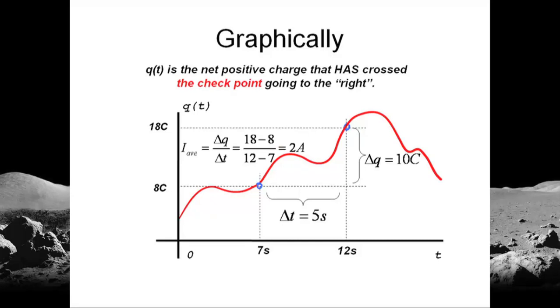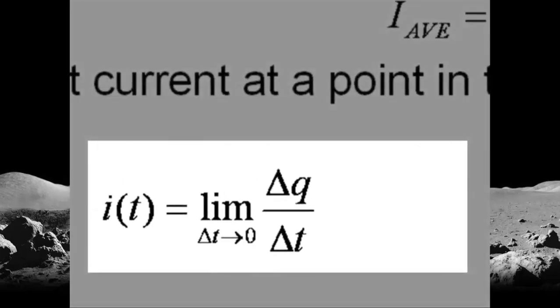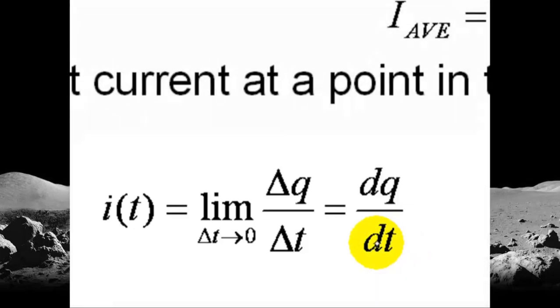The average current in that point of check is 2 amperes. That value happens to be the slope of the line that joins those two points, and that is the average current. It is delta q divided by delta t, the average current in the time window delta t. But what if what we want is not the average current? What we want is the exact value of the current at one point in time. Well, what we do is we make that time window as small as possible, infinitesimally small. That is the instantaneous current at one point in time. But you remember from differential calculus in the first year that that limit is the derivative of q with respect to time. That is right. The instantaneous current at any point in time is the first derivative of q with respect to time.